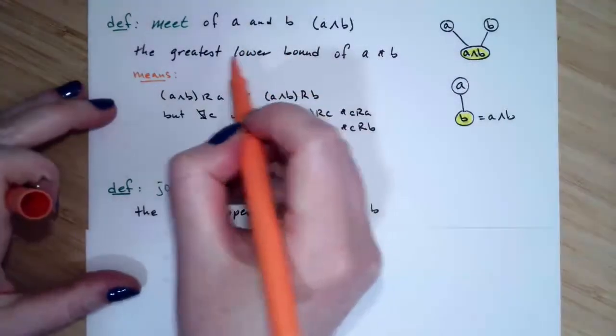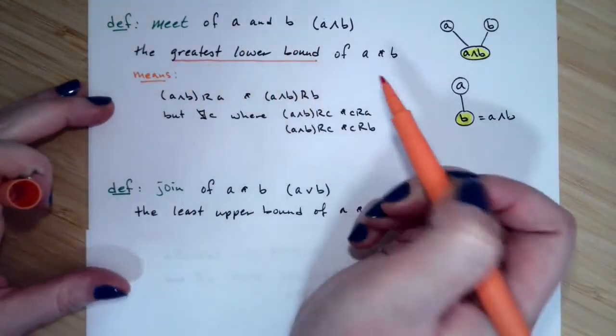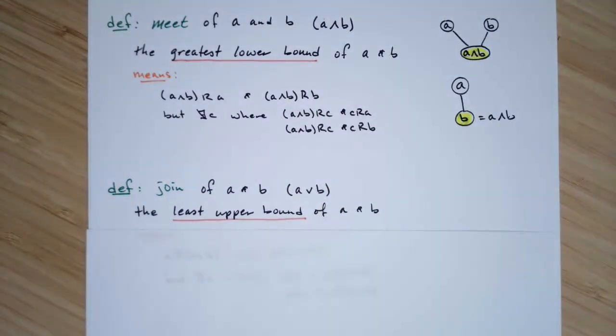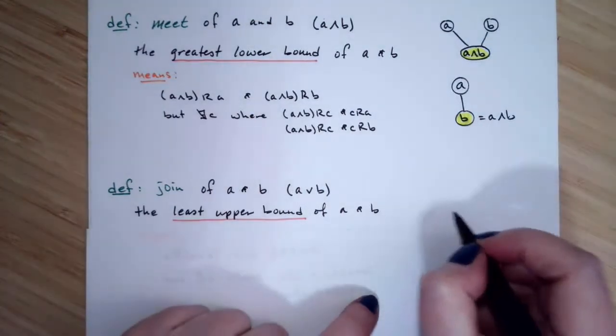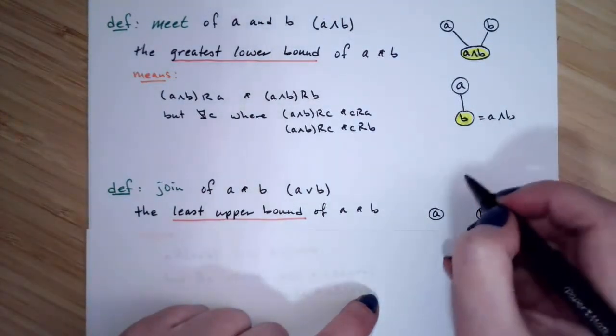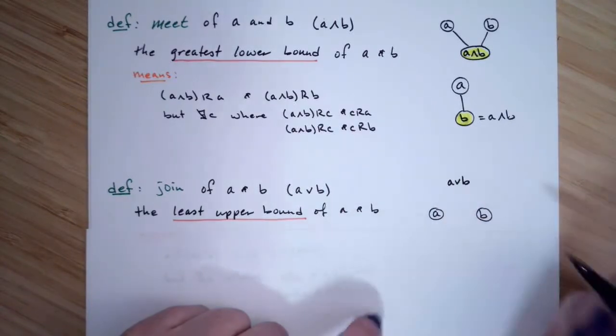And here you've got the least upper bound. So up above, we have the greatest lower bound, and now we're looking at the least upper bound. So if you're looking at an upper bound, that means it's going to be above A and B. So if we have A and we have B in our poset, the join is going to be somewhere up here above it.